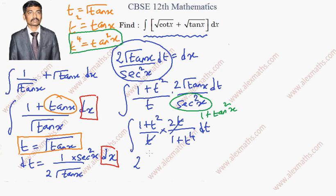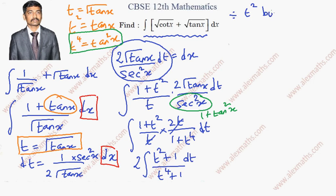Substituting sec²x = 1 + t⁴ and simplifying, we can cancel the t terms. Taking the 2 outside, we get 2∫(t² + 1)/(t⁴ + 1) dt. In the next step, we divide both numerator and denominator by t².